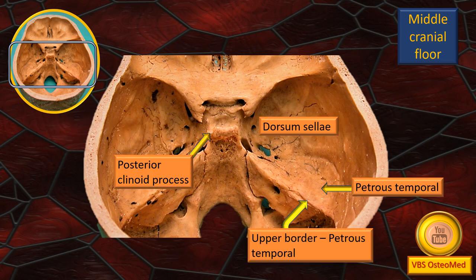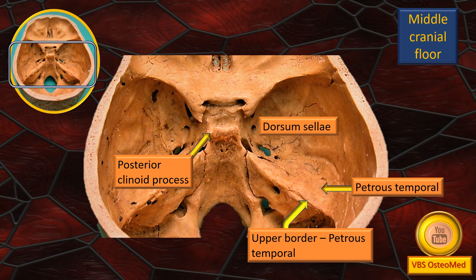There are four items to identify. The curved flashing arrow points to the posterior wall of the pituitary fossa, which we call the dorsum sellae. The two upper lateral edges of the dorsum sellae are the posterior clinoid processes — not very prominent in this specimen. Both the horizontal and oblique arrows point to the petrous part of the temporal bone. The lower arrow in particular refers to the upper border of the petrous temporal, where the superior petrosal sinus is located.